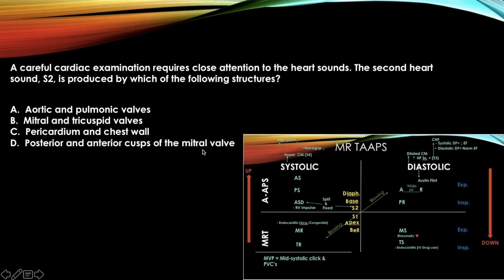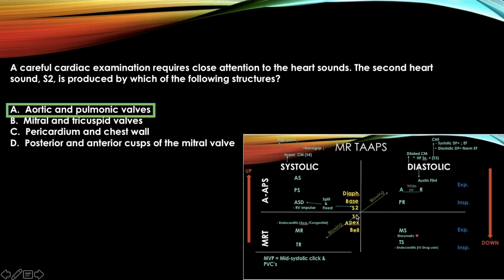Question 1 asks which valves produce the S2 heart sound. The answer is the aortic and pulmonic valves. On the Mr. Taps chart, find S2 and you'll see it is your pulmonic and aortic valves.